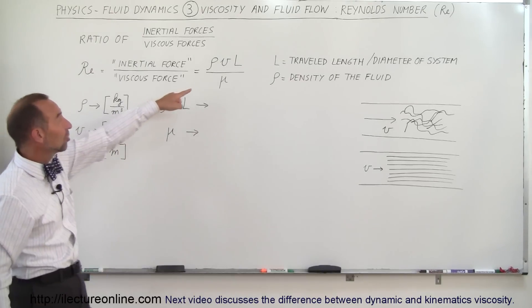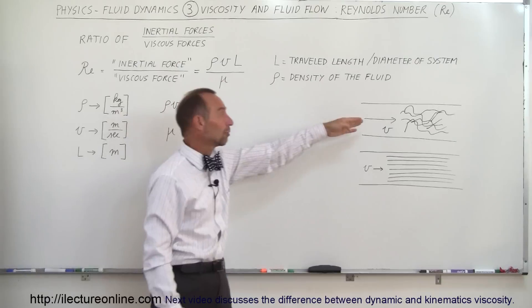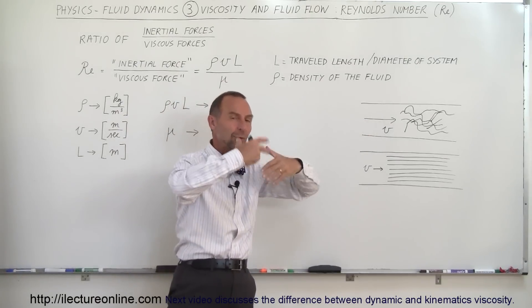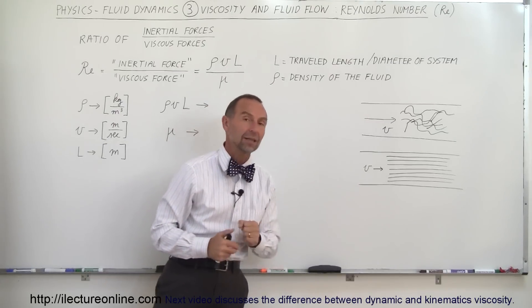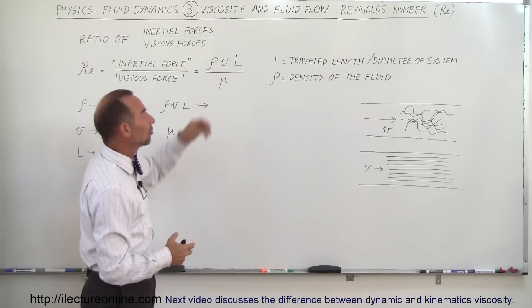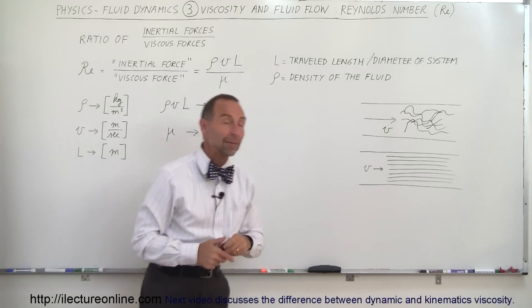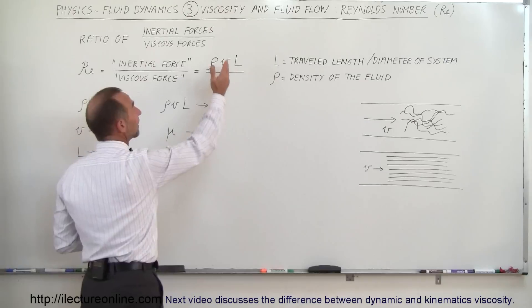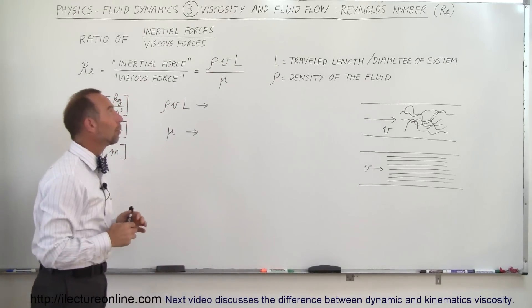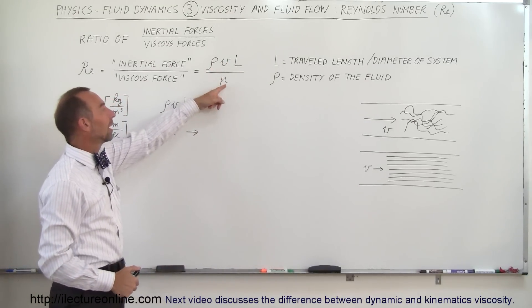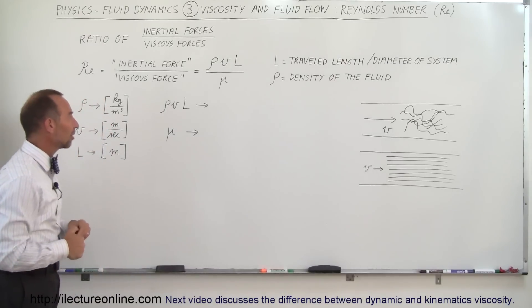One of the factors is velocity — larger velocities increase that ratio and therefore the Reynolds number, making turbulent flow more likely. When velocity is small, that ratio is smaller and you're more likely to have laminar flow. Also notice that the length of the pipe, the density of the liquid, and in the denominator the coefficient of viscosity are all important.